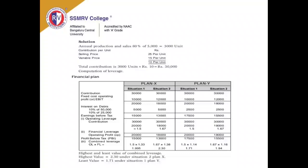Multiply operating leverage with financial leverage under both Plan Y situations. Situation 1: 1.5 × 1.14 = 1.71 combined leverage. Situation 2: 1.67 × 1.16 = 1.94 combined leverage. Summary: Highest combined leverage = 2.30 under Situation 2, Plan X. Least combined leverage = 1.71 under Situation 1, Plan Y. The higher the leverage, the riskier it is; the lower the leverage, the lower the risk quotient.